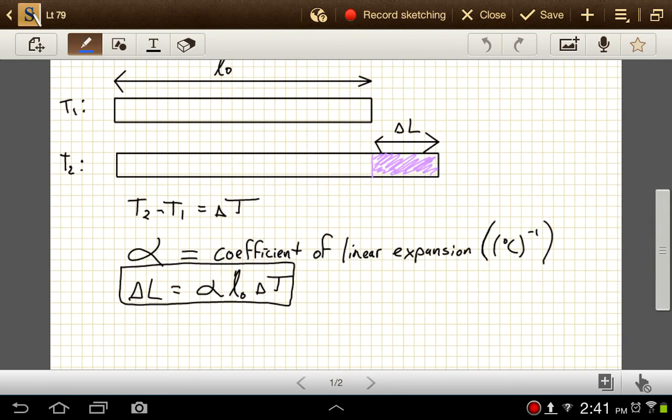The change in temperature is going to be delta T, and then we have this alpha symbol, the little fish thing. So the alpha is going to represent the coefficient of linear expansion. And that's just a property of the material. So some materials tend to expand a lot when they're heated, some only expand a little tiny bit when they're heated, and so this number expresses that quality of the material.